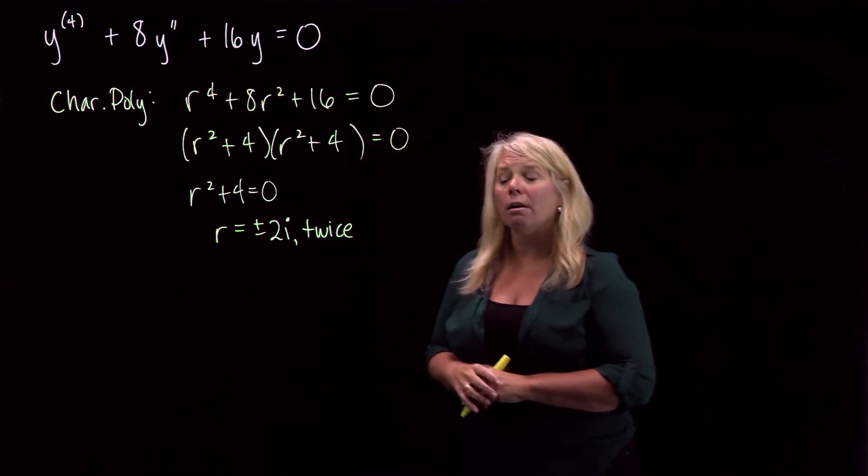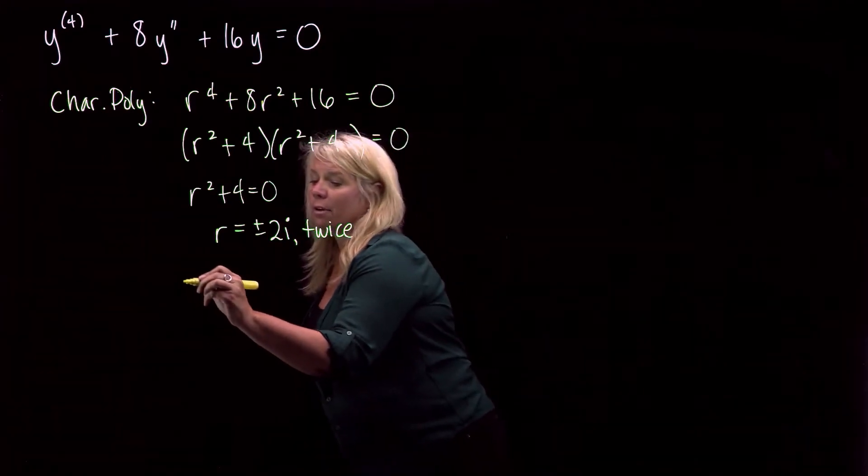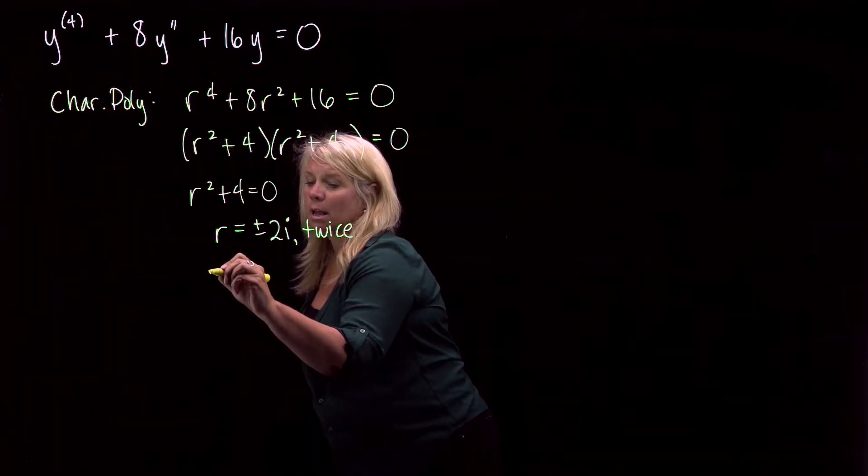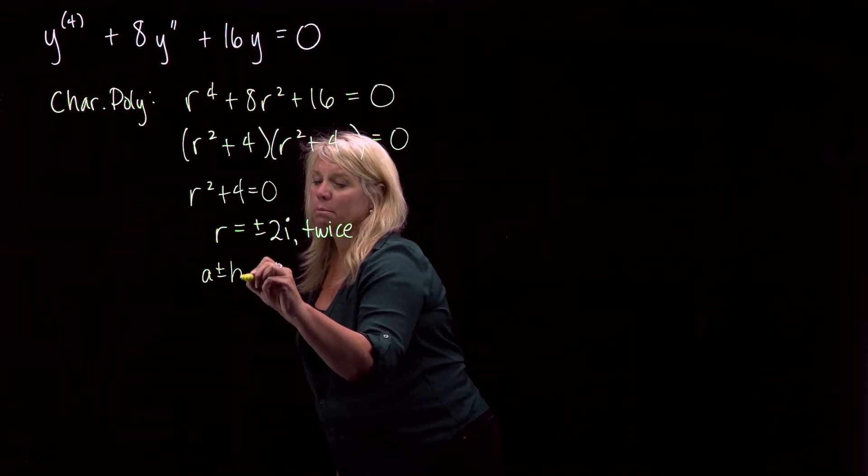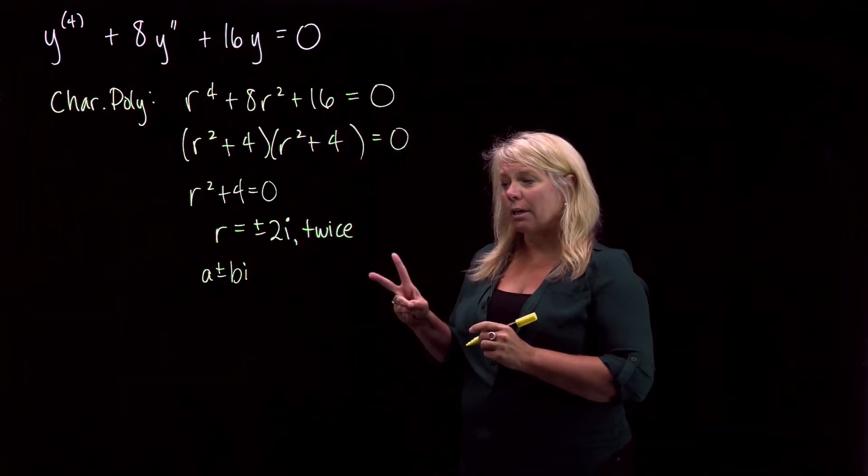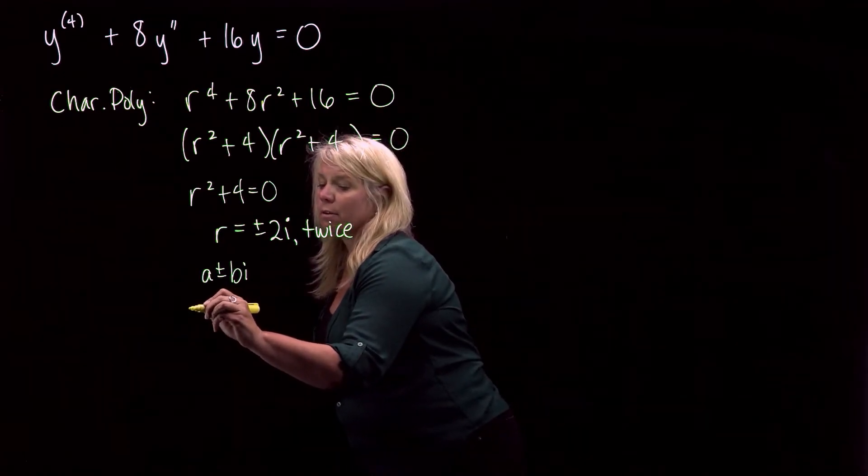So remember, when you have non real zeros of the form a plus or minus bi, you're going to get two linearly independent solutions, each of the form,